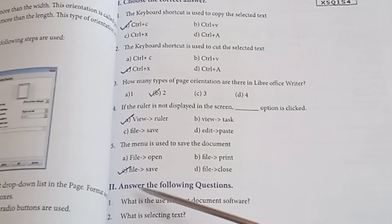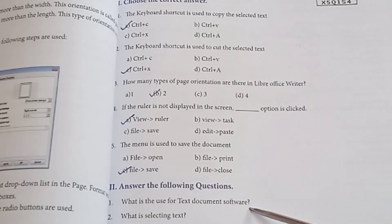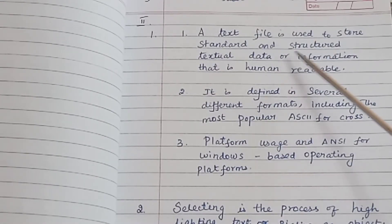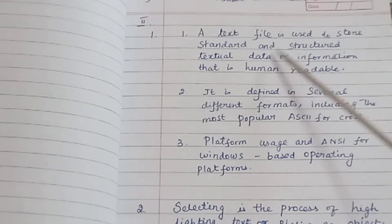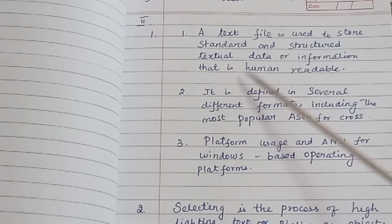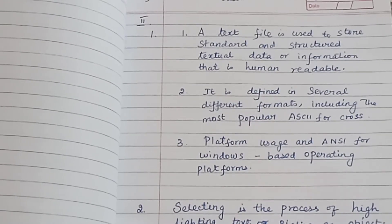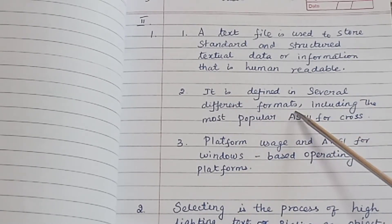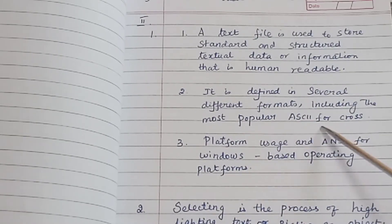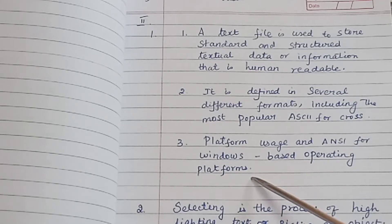Answer the following questions. What is the use of text document software? A text file is used to store standard and structured data or information that is human readable. It is defined in several different formats, including the most popular ASCII for cross-platform usage and ANSI for Windows-based operating platforms.